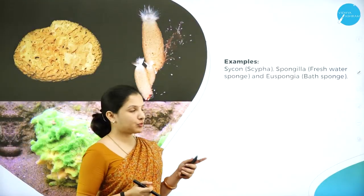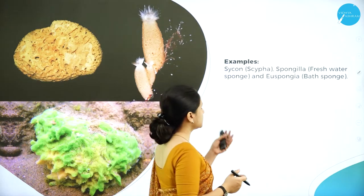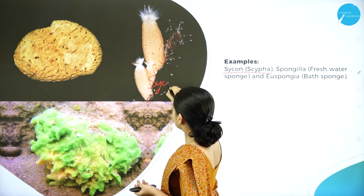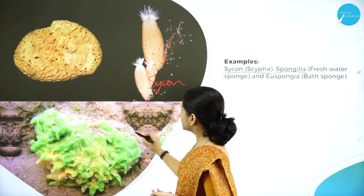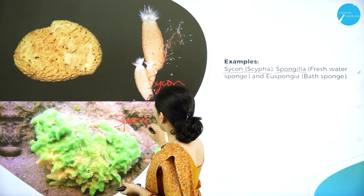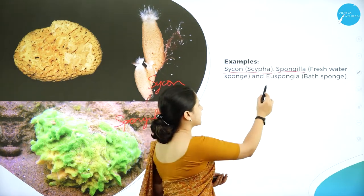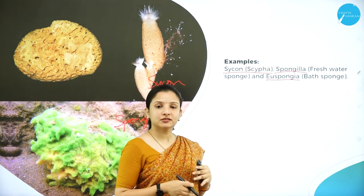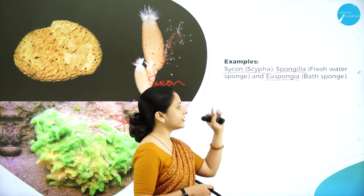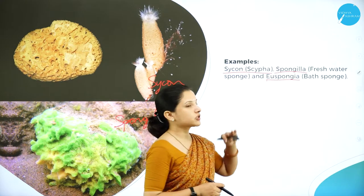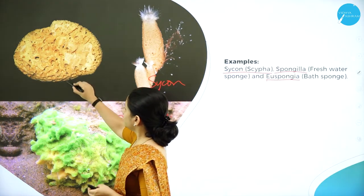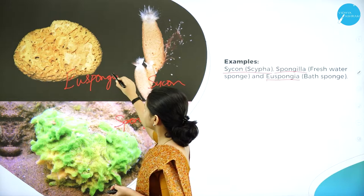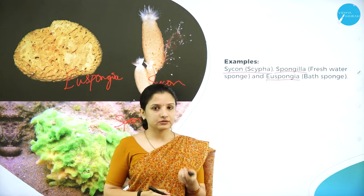There are some examples of sponges. We have Sycon, which is also called Scypha - one best example for a sponge. Then comes Spongilla, the freshwater sponge. Then one more is the bath sponge, that is Euspongia. These are the different types of sponges that are present. This is about sponges.